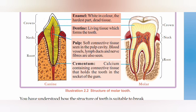This is a living tissue which forms the tooth — called dentine. Pulp: soft connective tissue seen in the pulp cavity. Blood vessels, lymph duct and nerve fibers are also seen in the pulp cavity.